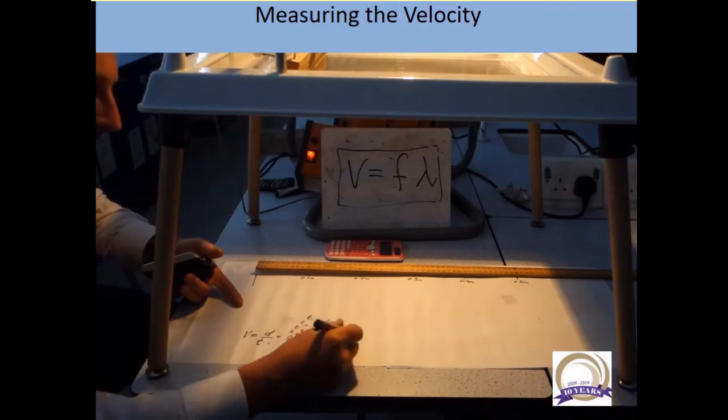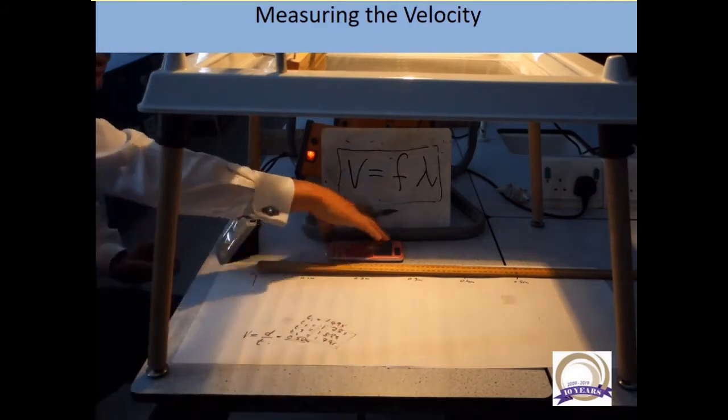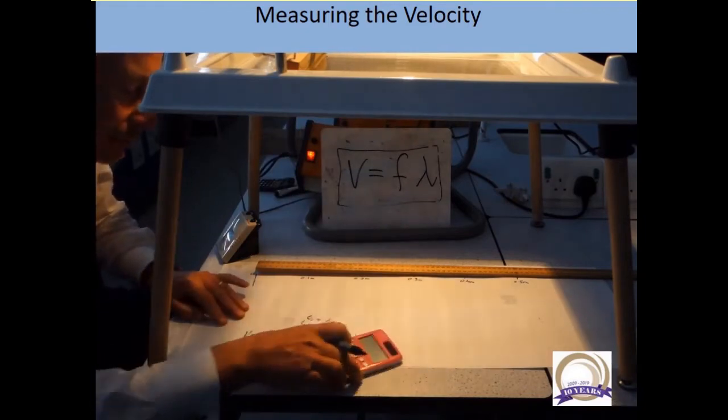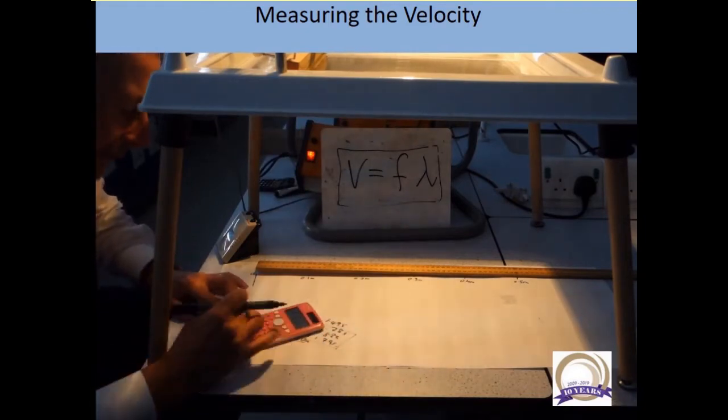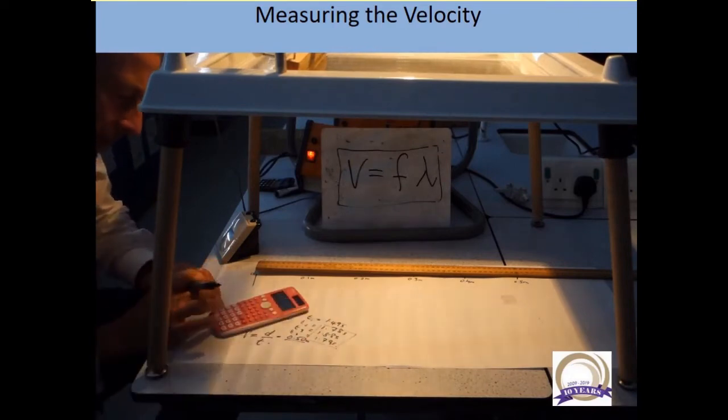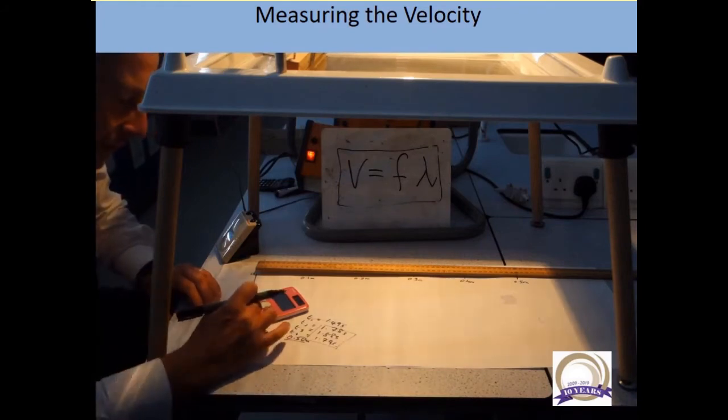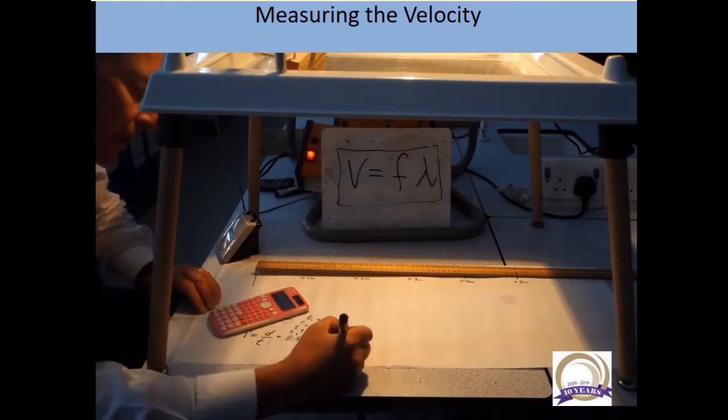Okay, so we've got three times. Let's do a mean of those. Add them all up and divide by three. Out comes the pink calculator. 1.78 plus 1.88 plus 1.79. So that anomalous result had gone. Mean time is 1.82 seconds.